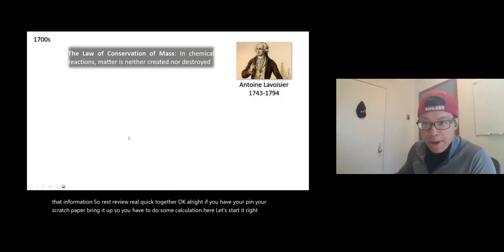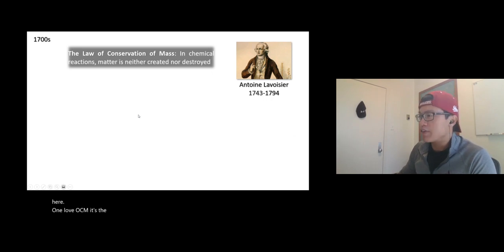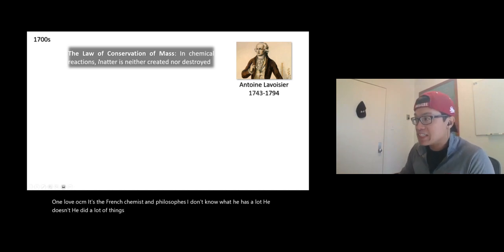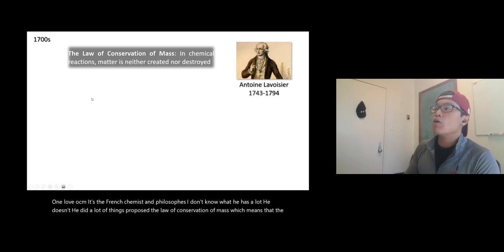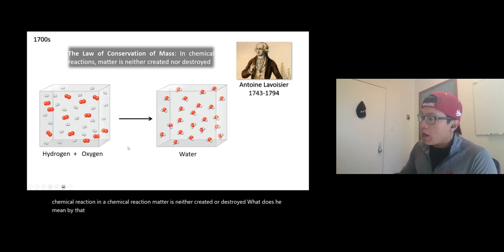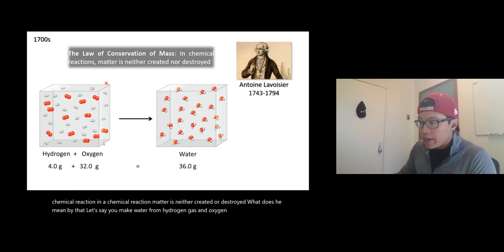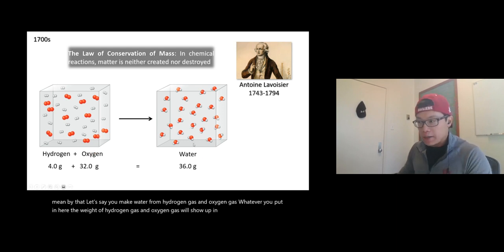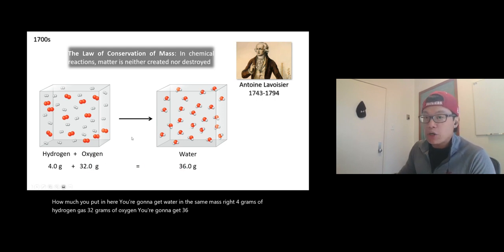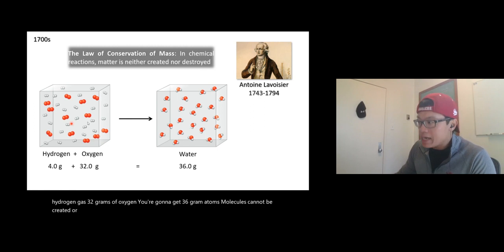Antoine Lavoisier was a French chemist and philosopher who proposed the law of conservation of mass, which means that in a chemical reaction, matter is neither created nor destroyed. For example, when you make water from hydrogen gas and oxygen gas, the mass you put in equals the mass you get out — 4 grams of hydrogen gas plus 32 grams of oxygen gives you 36 grams of water. Atoms and molecules cannot be created or destroyed.